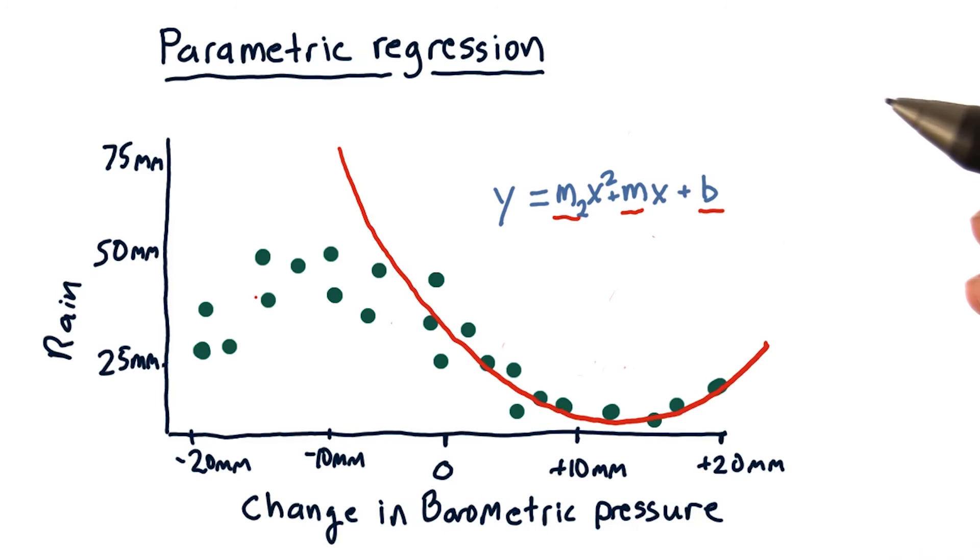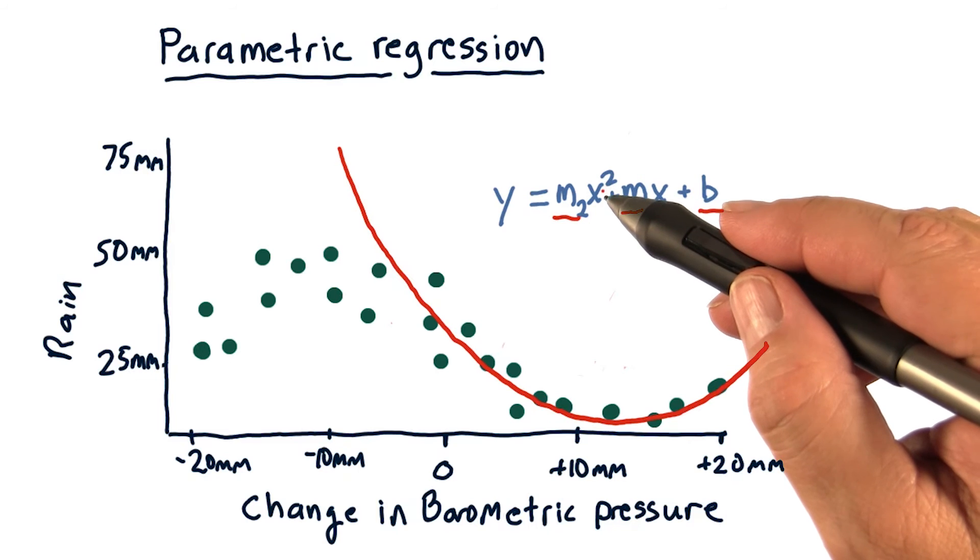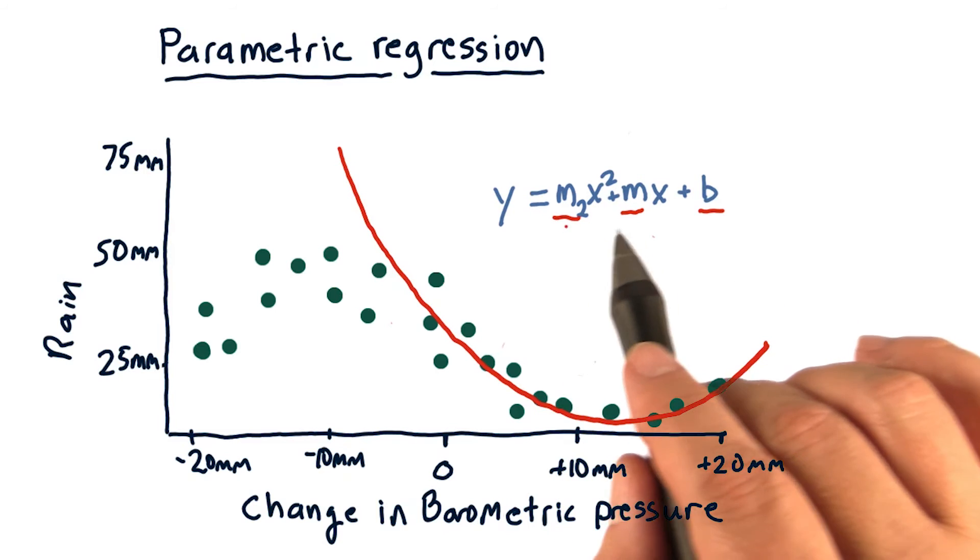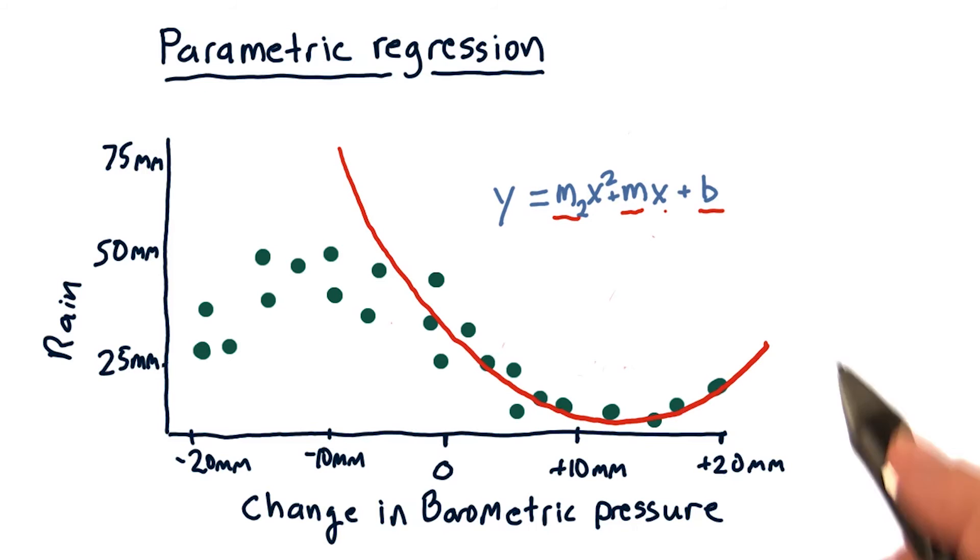Now we can add more terms. We can fit an x cubed term and have another parameter and so on. In general, these parametric approaches come away with a number of parameters. The more complex the model, the more parameters.